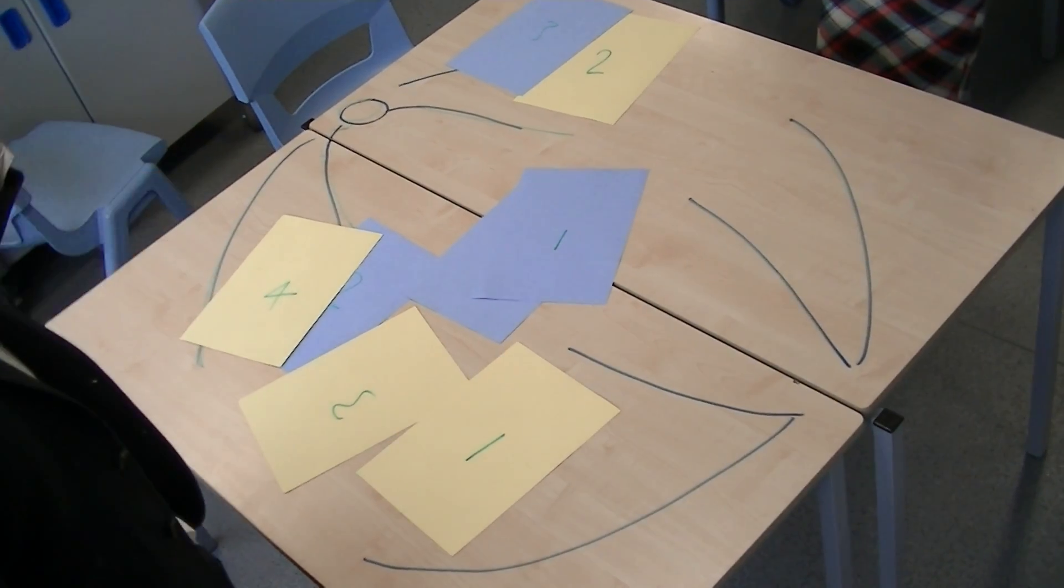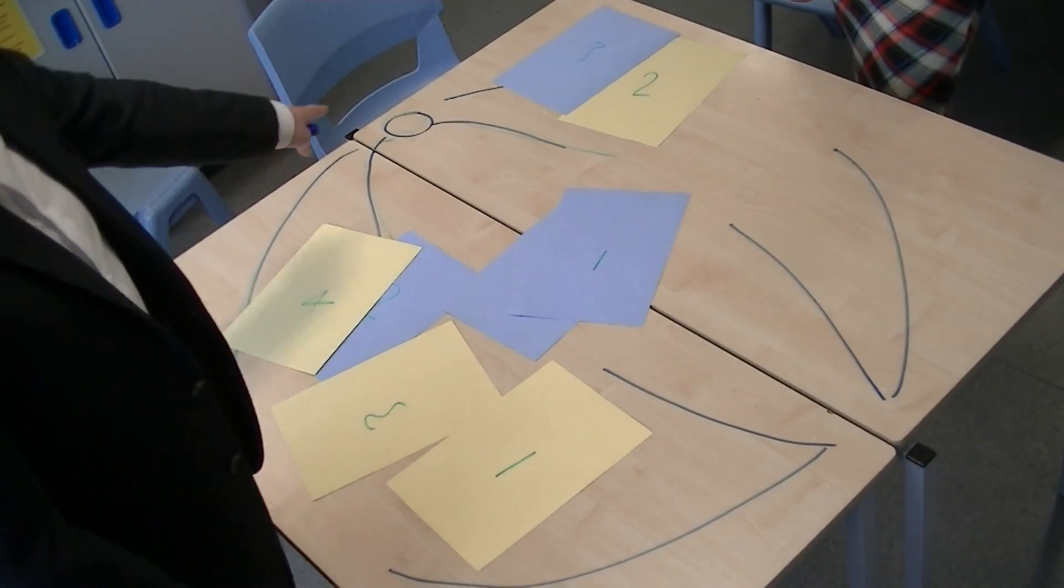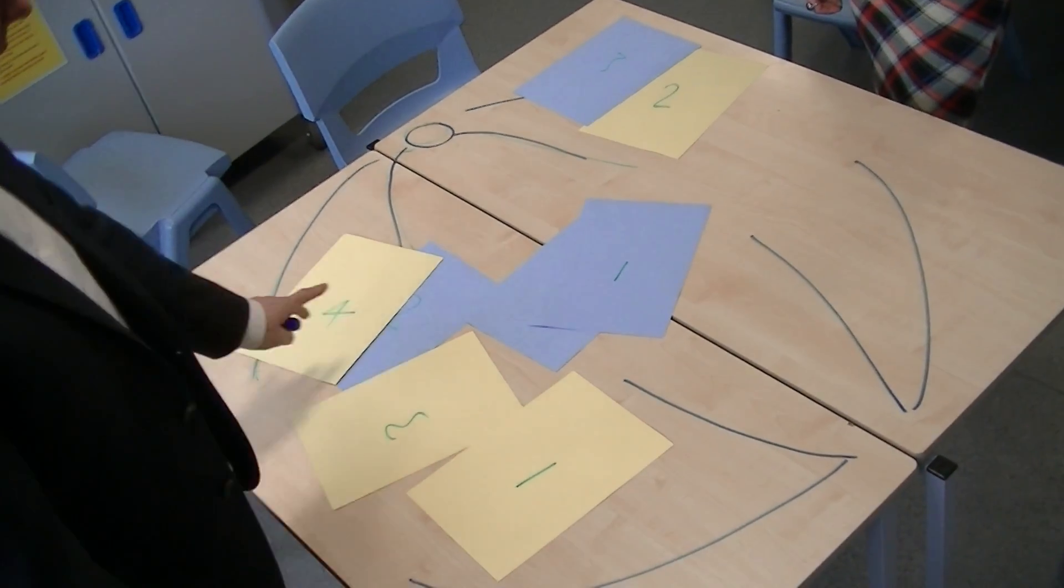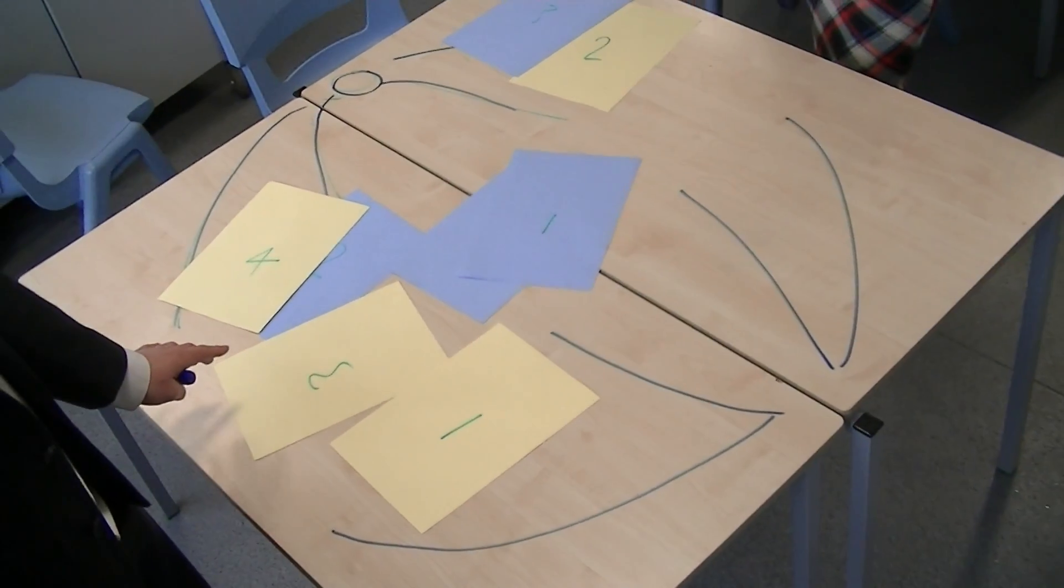So we're going to try and discuss independent assortment, and Lucy's going to help me out here. I want you to imagine this is a cell, and the spindle fibers tell us it's a cell undergoing cell division.